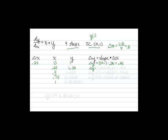Our delta y at the next step is 0.25 plus 1.25, because that's our x plus our y, times 0.25. So we get 1.5 times 0.25, which gives us 0.375. Adding that to our old y value, we now have a new y value of 1.625.